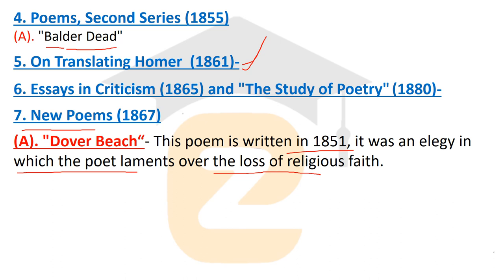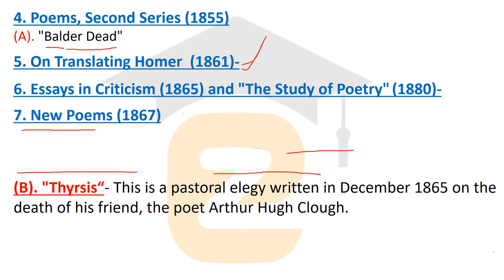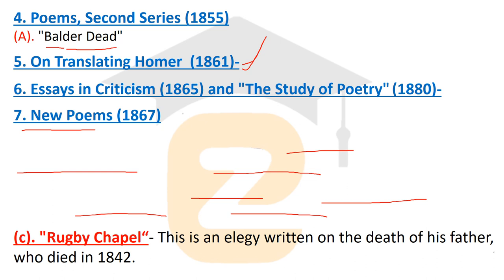Thyrsis is also a very important poem — it is a pastoral elegy written in December 1865 on the death of Matthew Arnold's friend, the poet Arthur Hugh Clough, who was his friend at Oxford. It was written in 1865 but published in 1867 in the New Poems volume.